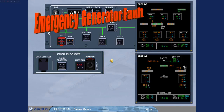If the emergency generator is not working, the red fault light stays illuminated on the emergency generator indicator. This failure causes the aircraft to be powered only from the batteries. For training purposes, both ECAM ELEC pages are shown.